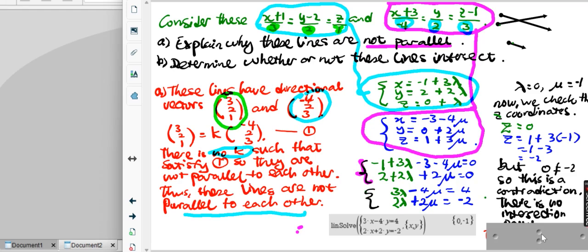Thus, there is no intersection. These two lines are skewed—they are not intersecting with each other. Skewed is spelled S-K-E-W. Thank you very much, bye-bye.